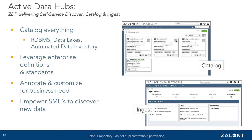Next, the ability to annotate or customize for business need — the different types of attributes you might want to store — is really important. Whether that's via key-value pairs or custom attributes or all of the above, you want to be able to add additional metadata that may be specific to your business so that it can increase the search capabilities and make for a more meaningful understanding of the data.